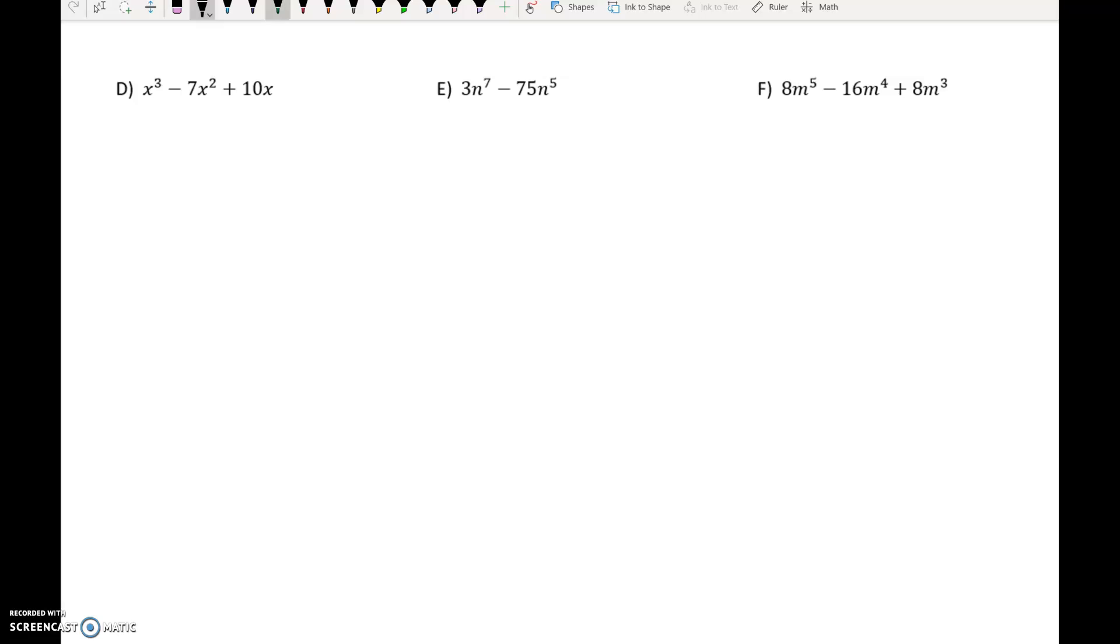I think we can divide both of those by 3. And how many n's? 5, n to the 5th. 3 divided by 3 is 1. n to the 7th divided by n to the 5th is n squared. Negative 75 divided by 3 is negative 25, and we're taking the n to the 5th out.